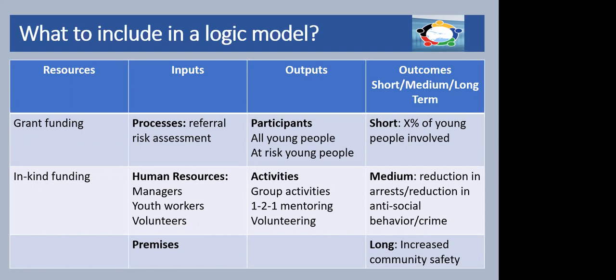The outputs are really the services provided by the program to its participants, and also the type of activities involved. Logic models often distinguish between participants and activities. Some outputs would be the number of young people that participated in the summer youth club — we're open to all young people in the neighbourhood — but the local police or school might want to target some at-risk young people, people that might cause vandalism or disruption. These are very much seen as outputs — the number of young people seen — and you might want to distinguish between different categories of participants.